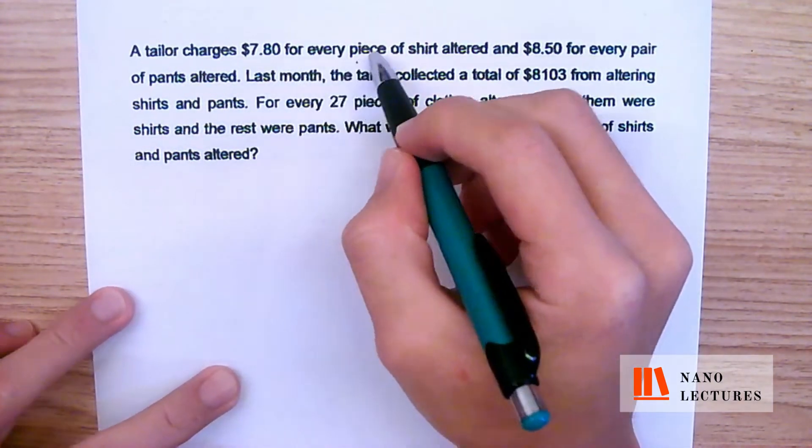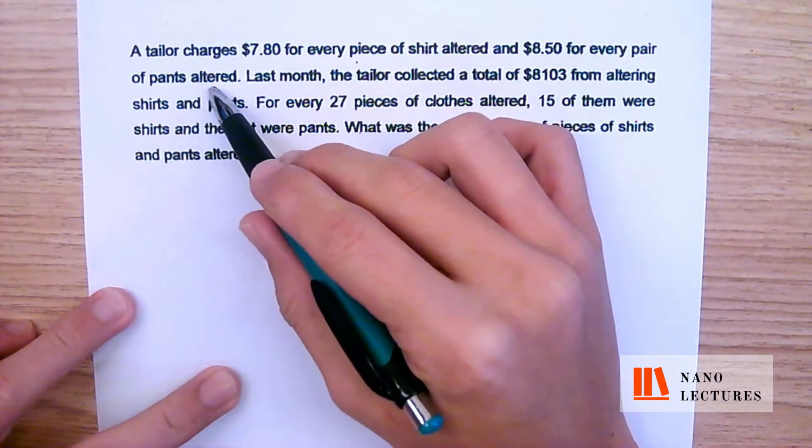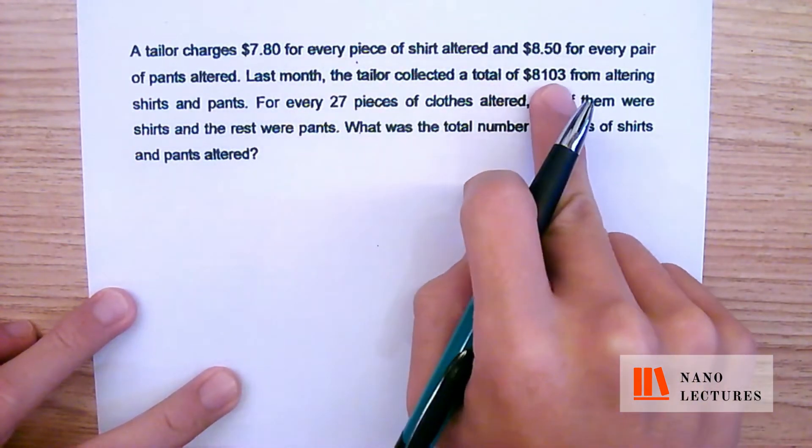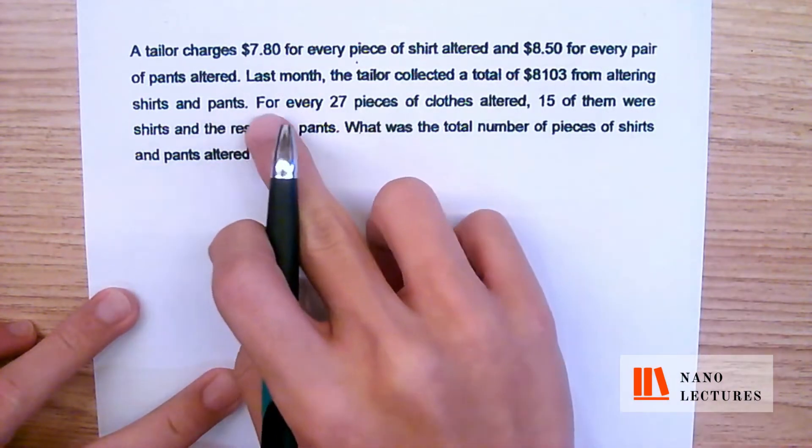The tailor charges $7.80 for every piece of shirt altered—that's very cheap—and $8.50 for every pair of pants altered. Last month, the tailor collected $8,103 from altering shirts and pants.